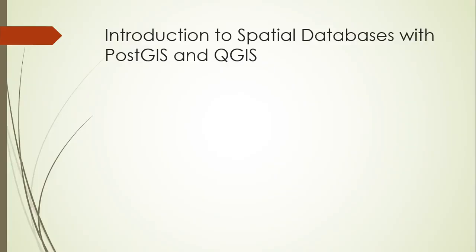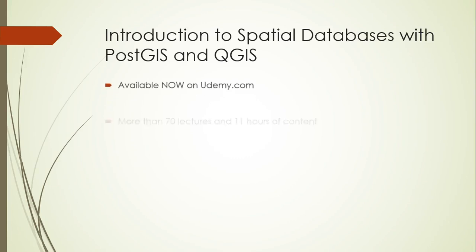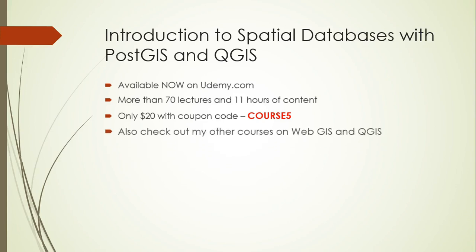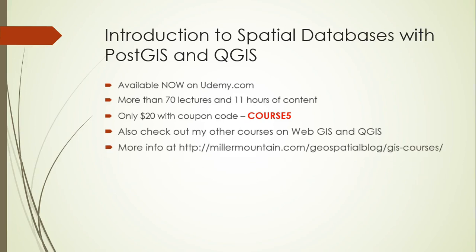Thanks for listening. This was just one lecture in an entire course on spatial databases focused on PostGIS and QGIS, available now on Udemy.com. It has more than 70 lectures and 11 hours of content, with more being added all the time. You can get it now for only $20 with the coupon code COURSE5. You're also welcome to check out other courses on WebGIS and QGIS at the following location, or just Google 'Geospatial Brainstorming Courses' and it should take you right to the site.